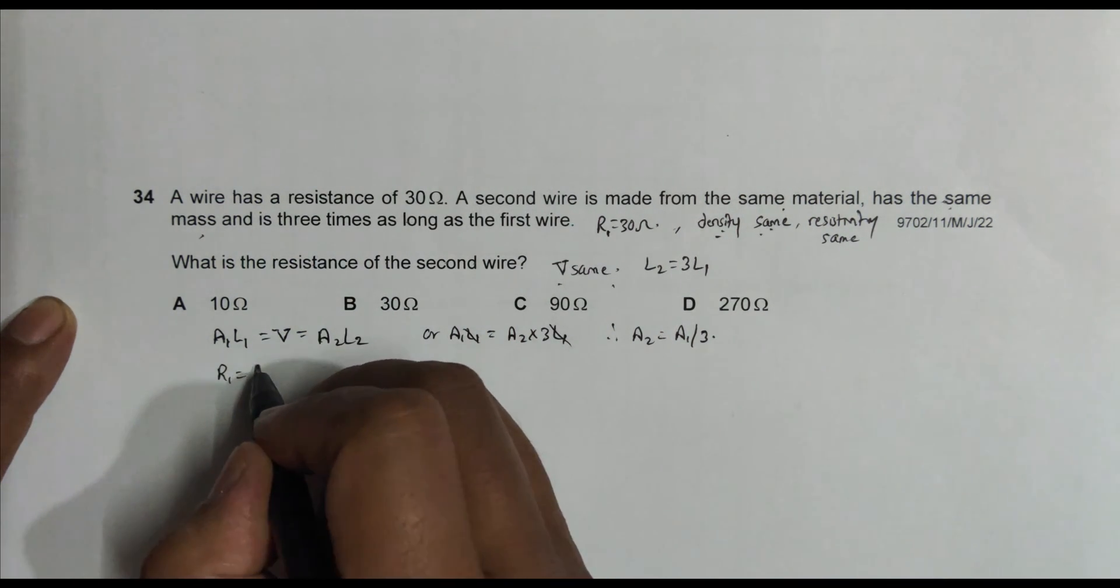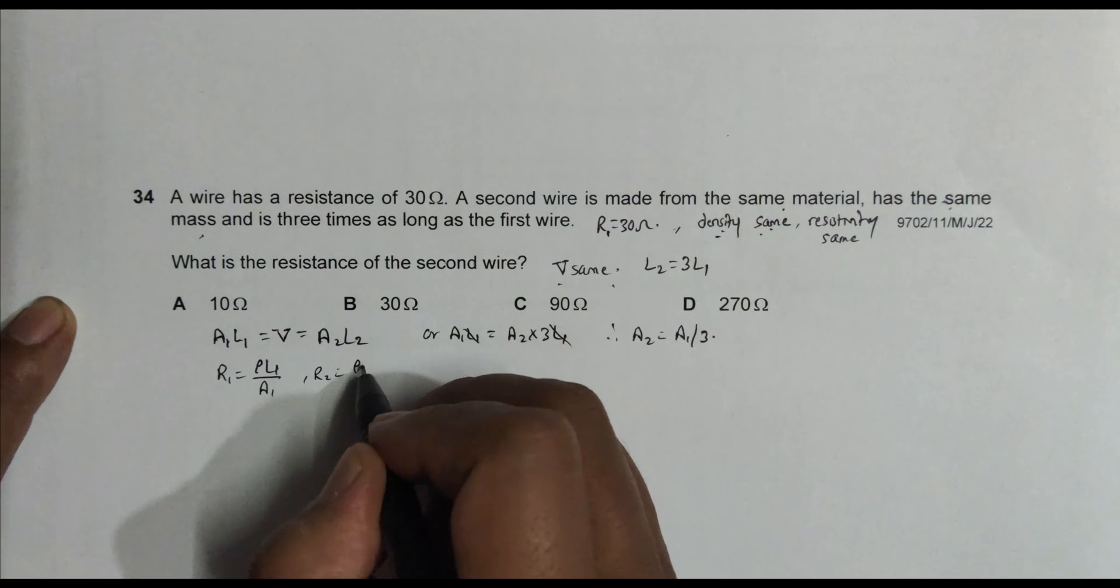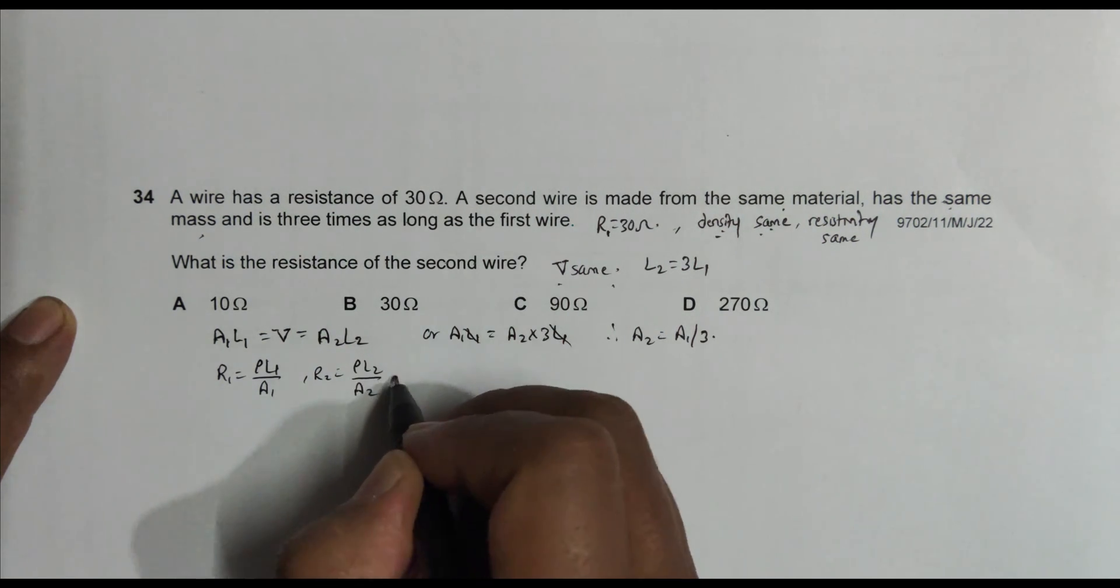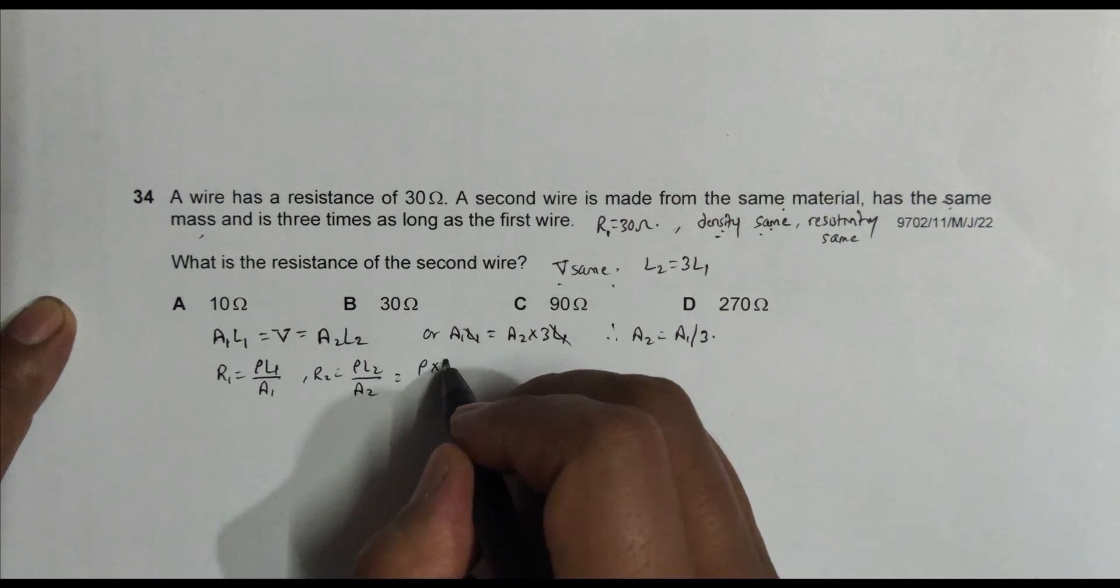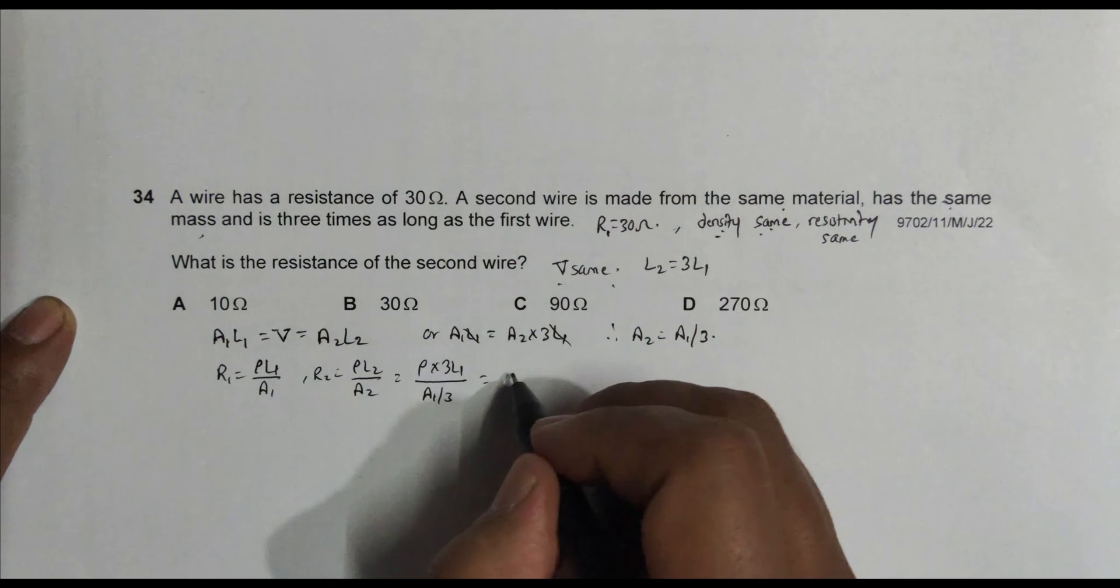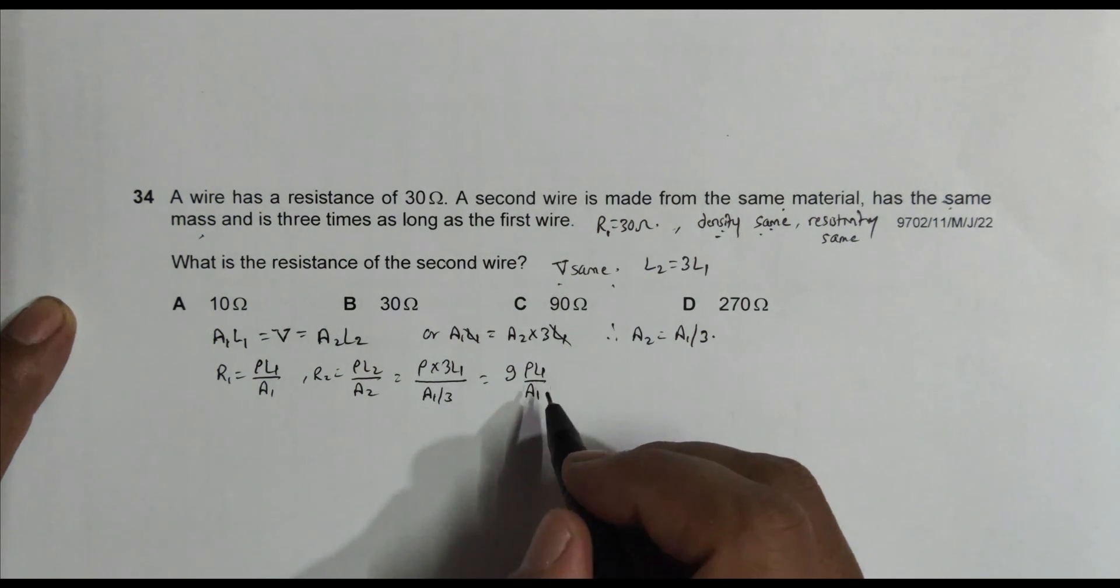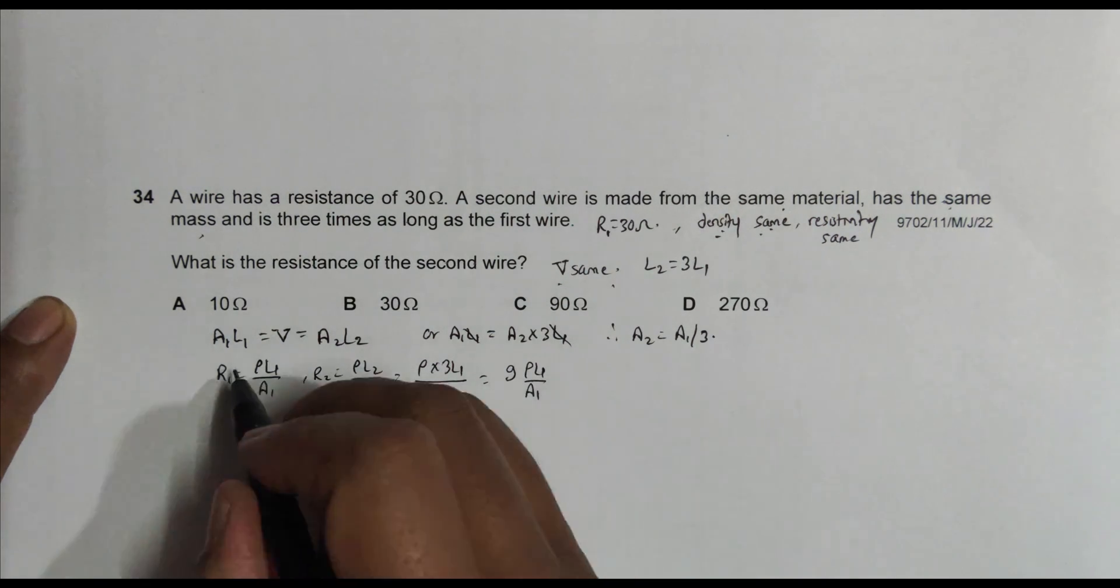R1 equals ρL1 by A1, where ρ is the resistivity. R2 equals ρL2 by A2, so this equals ρ times 3L1 divided by A1 by 3. The 3 goes up to give 9, so 9ρL1 by A1. This ρL1 by A1 equals R1.